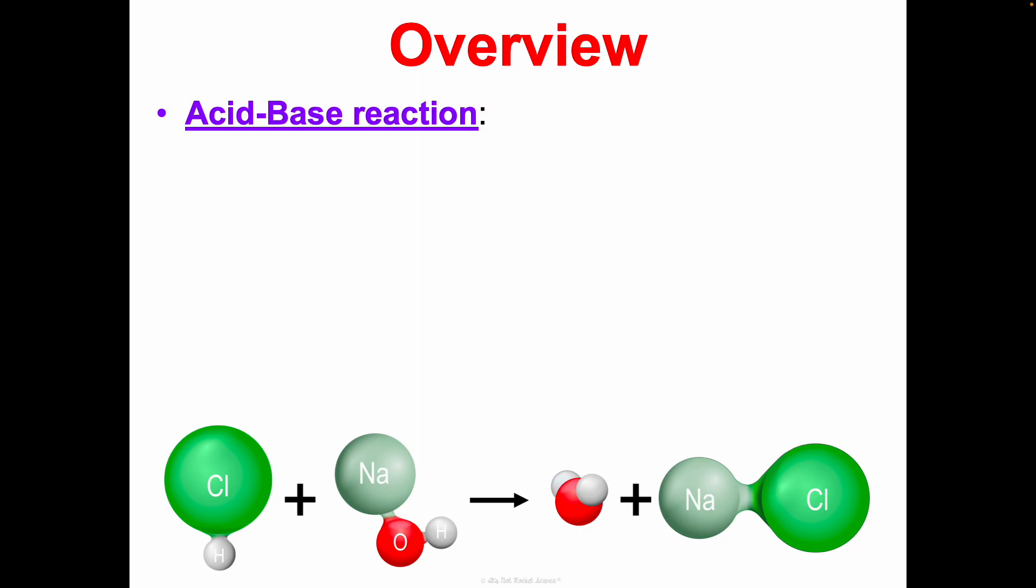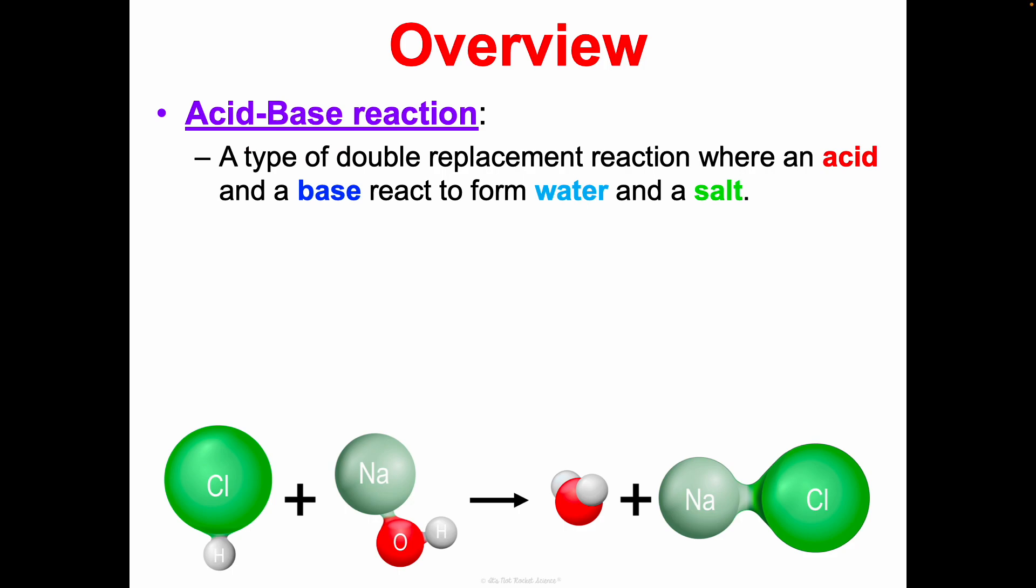So an acid-base reaction, like we said, is a type of double replacement reaction where an acid and a base react to form water and salt. Now this doesn't always make water and salt, but it usually does. And for your purposes in this class, that's what you're going to see as well.